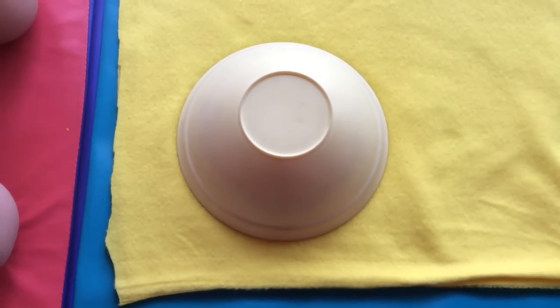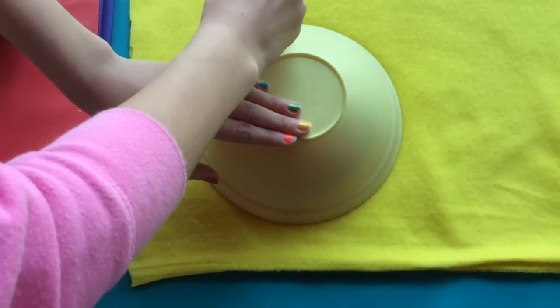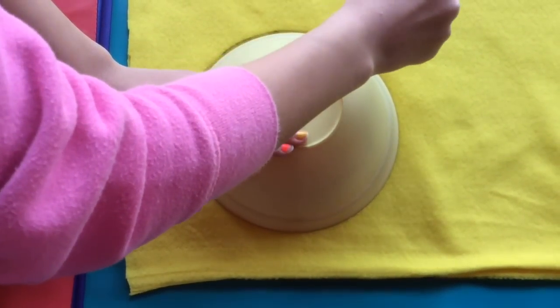When I said you need a circular object, I meant something kind of like a bowl, so you can use your Sharpie to trace over the fabric.